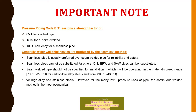Important note: pressure piping code B31 assigns a joint efficiency factor of 85% for rolled pipe, 60% for spiral welded, and 100% for seamless pipe. Generally, wider wall thicknesses are produced by the seamless method. Seamless pipe is usually preferred over welded pipe for reliability and safety. Seamless pipe cannot be substituted by other types, but ERW and SAW pipe can be substituted for each other. Seam welded pipe should not be specified for installations operating in the material creep range.